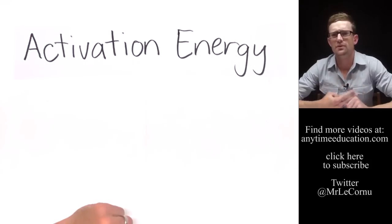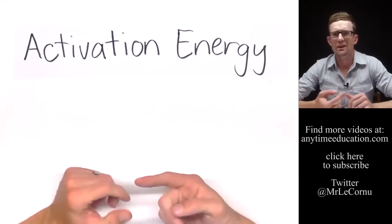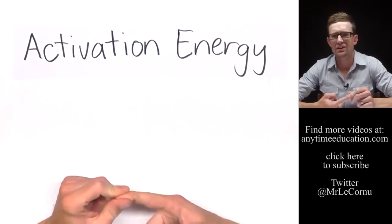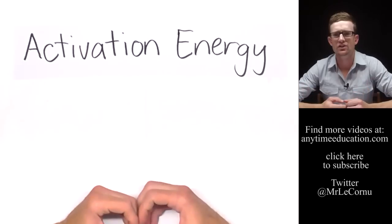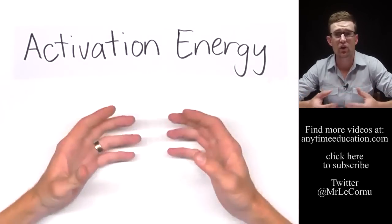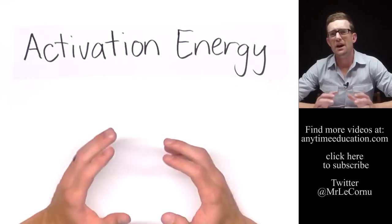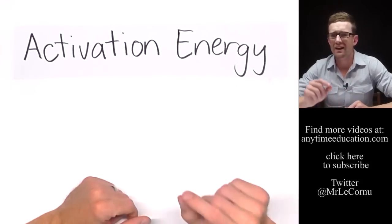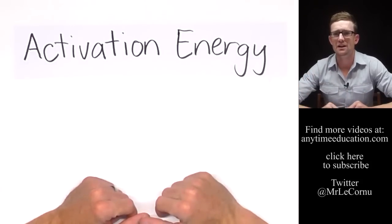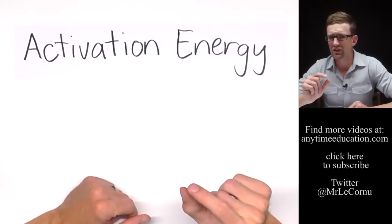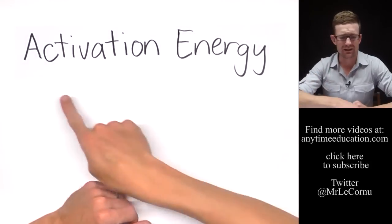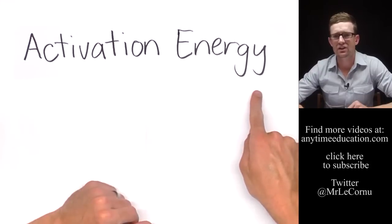So there's really two types of chemical reactions. We can have endothermic reactions which require energy, and we can have exothermic reactions which give off energy. But all reactions require a little bit of energy just to get them started, and that little bit of energy that's required to get them started is called the activation energy.